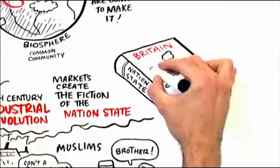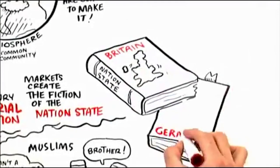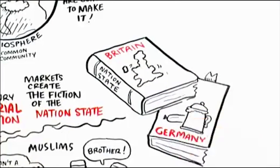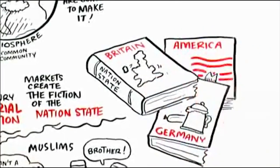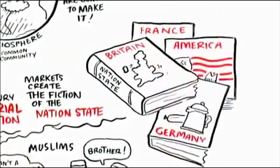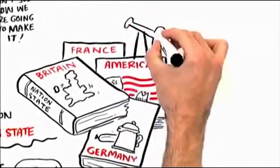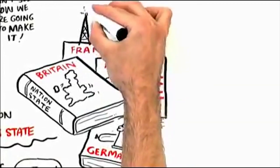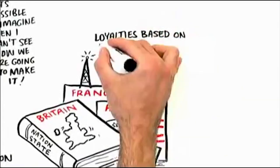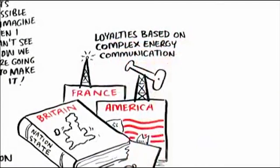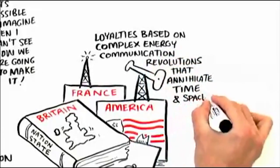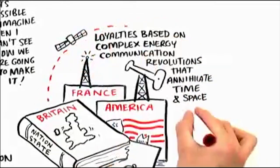And all of a sudden, the Brits start to see others in Britain as extended family. The Germans start to see Germans as extended family. The Americans as Americans. There was no such thing as Germany. There was no such thing as France. These are fictions. But they allow us to extend our families so that we can have loyalties and identities based on the new complex energy communication revolutions we have that annihilate time and space.